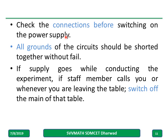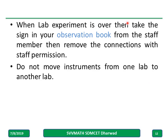Check all connections before switching on the main supply — do not simply switch on and look at the output directly. Remember all grounds should be shorted; you should not have two separate grounds — just short them so only one common ground exists in your circuit. If the supply goes off during the experiment or a staff member calls you, switch off the main supply before moving.